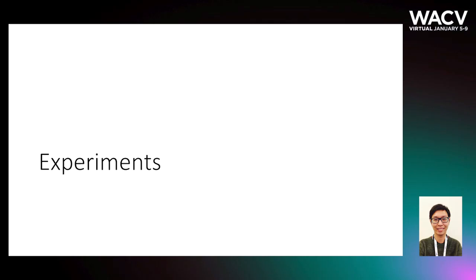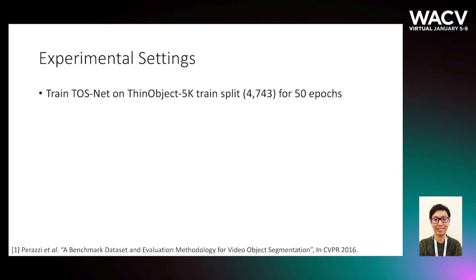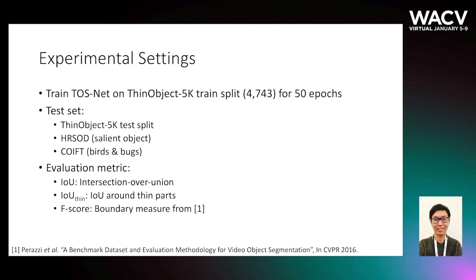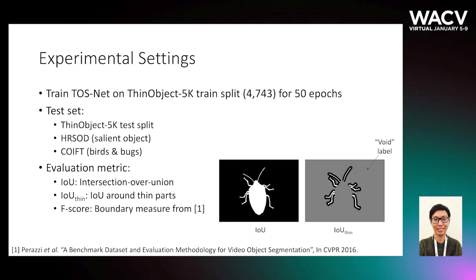Next, we discuss our experimental setup. We train our TOSnet on our Thin-Object-5K train split for 50 epochs and test on three test sets: Thin-Object-5K test split, HRISOD, and COIFT. We use three evaluation metrics including IOU-thin, designed to measure the IOU around thin parts — where grey-coloured regions are ignored during evaluation — and a boundary AP score to measure the quality of segmented edges.